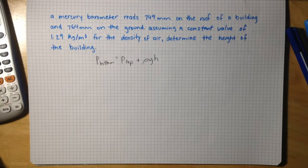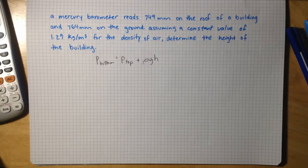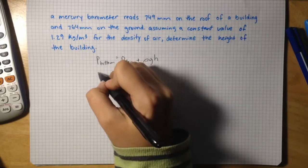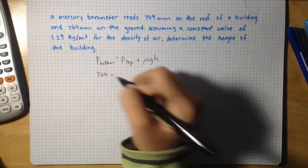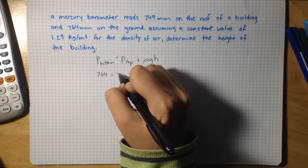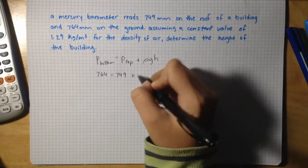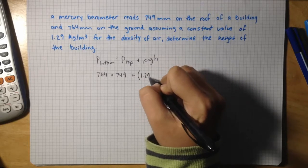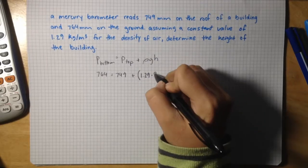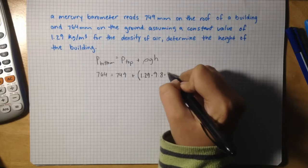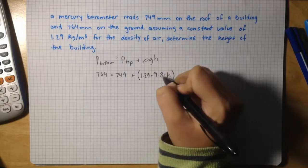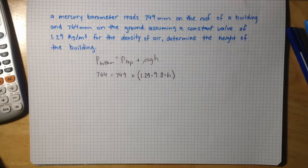Substituting values from the given information: pressure at the bottom is 764, pressure at the top is 749, density of air is 1.29, gravity is 9.8, and height is the variable that we are looking for.